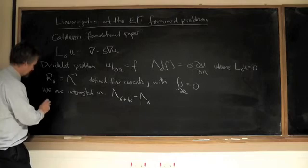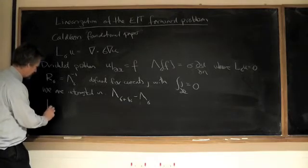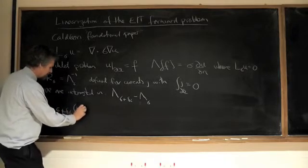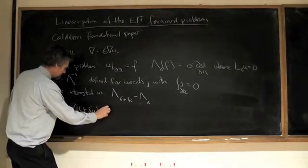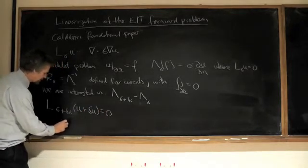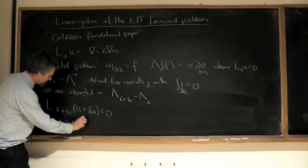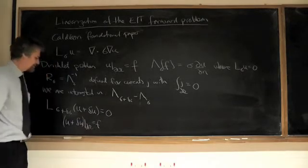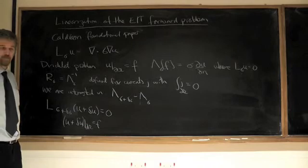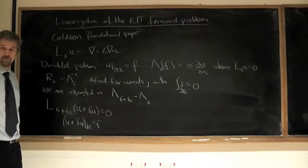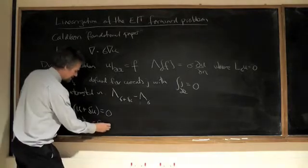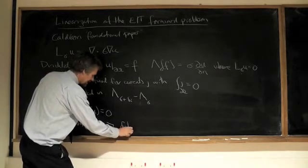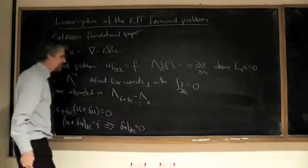And so, in particular, we're considering L_{sigma + delta_sigma} of U plus delta U is equal to zero. Where U plus delta U, restricted to the boundary, is still the same value, f, as it was originally. Because we're assuming we've got constant voltages on the boundary. So, it's the current density that's changing. In other words, in particular, delta U at the boundary is equal to zero. And that makes things quite very simple.